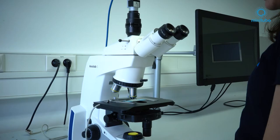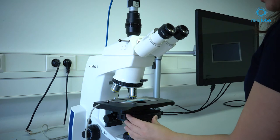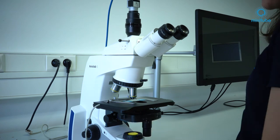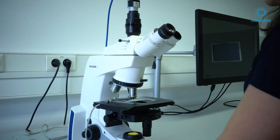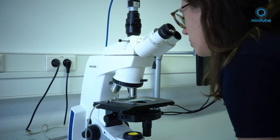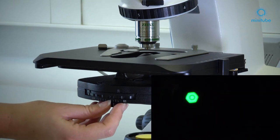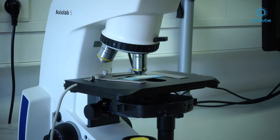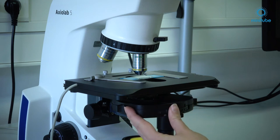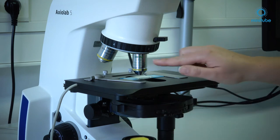To adjust the aperture set the condenser to bright field and take an eyepiece from the tube barrel and look through the barrel. Open the aperture to a size of approximately 70-80% of the area of view. Now switch the condenser back to the appropriate phase.